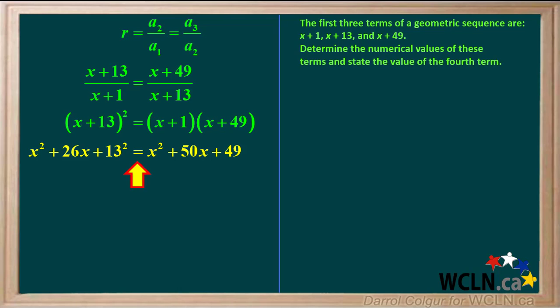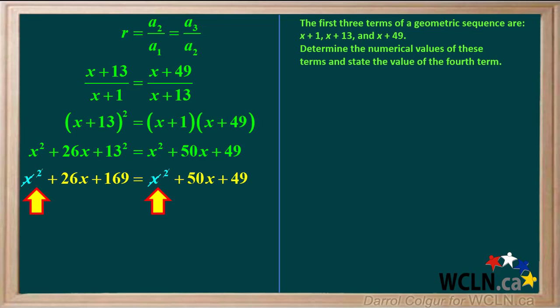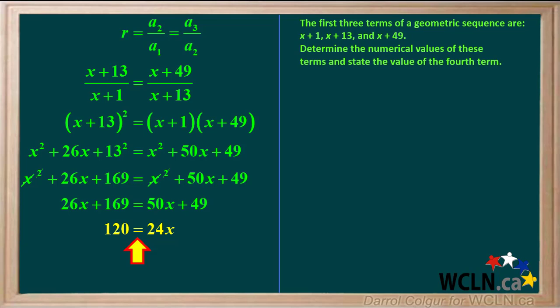Expanding everything gives us this equation. We can cancel the x² term from both sides, so we're left with 26x plus 169 equals 50x plus 49. Simplifying this gives us 120 equals 24x, so x equals 120 divided by 24, which equals 5.